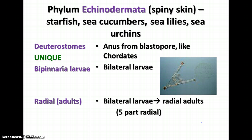Five-part radial symmetry means the body parts are usually in multiples of five. In organisms with radial symmetry, the body parts repeat around the center, and it can be divided into any number of segments from the center to the edge — as opposed to bilateral symmetry, where you have two mirror-image sides.